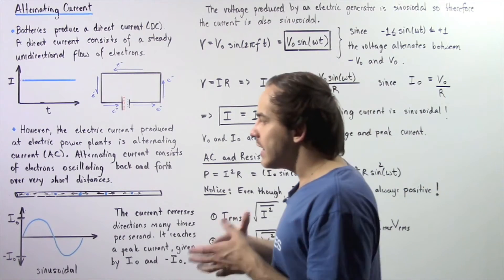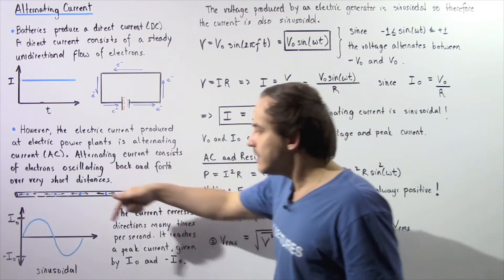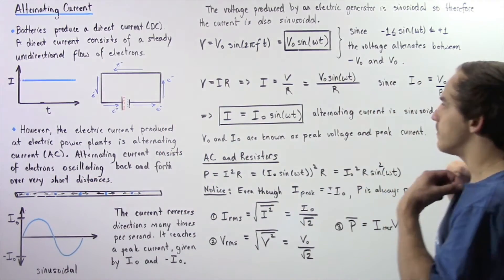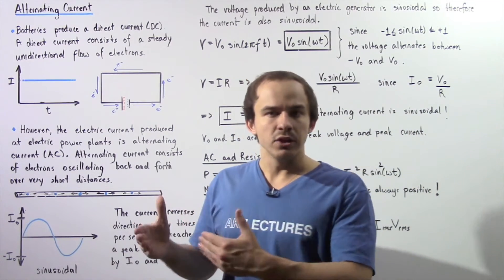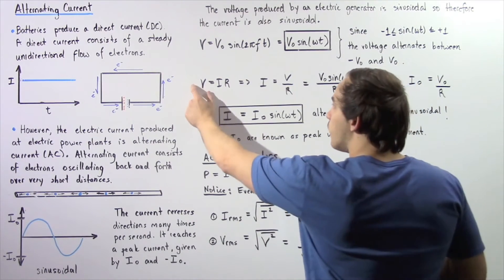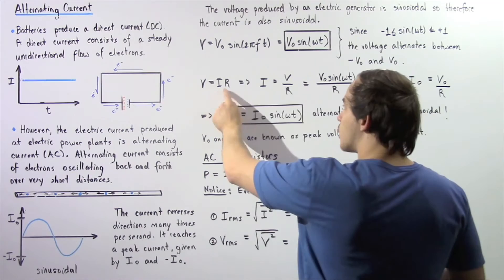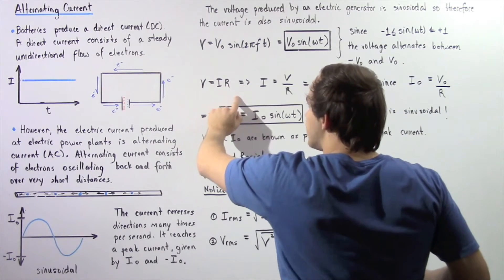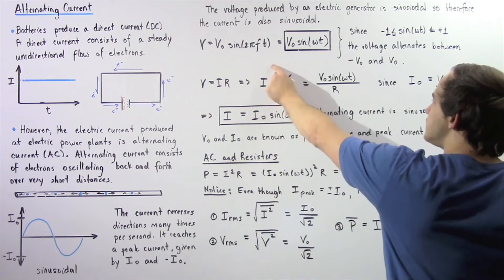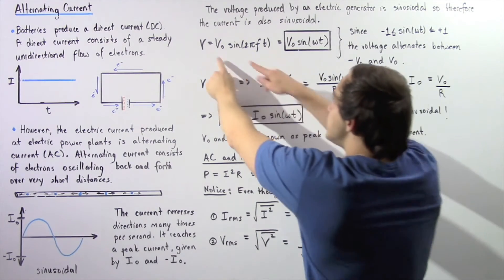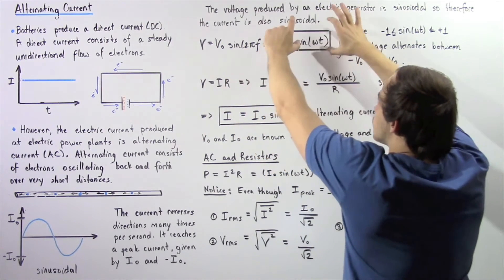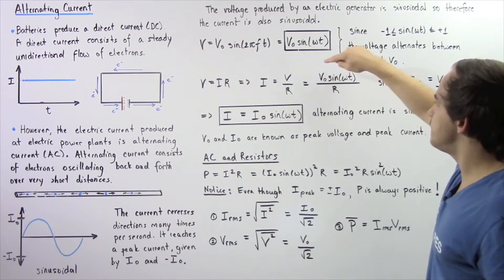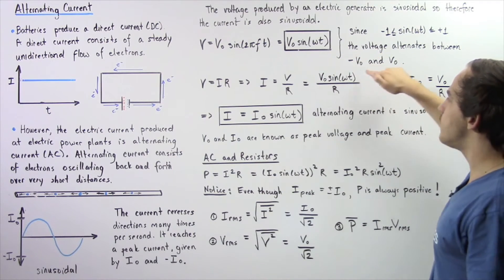Now let's determine the equation for the electric current at any given moment in time, as shown in the following diagram. Recall Ohm's law: voltage equals the product of electric current and resistance — V = IR. Rearranging and solving for I, the current equals voltage divided by R. Substituting the voltage equation, the electric current is equal to V₀ · sin(ωt) divided by R.